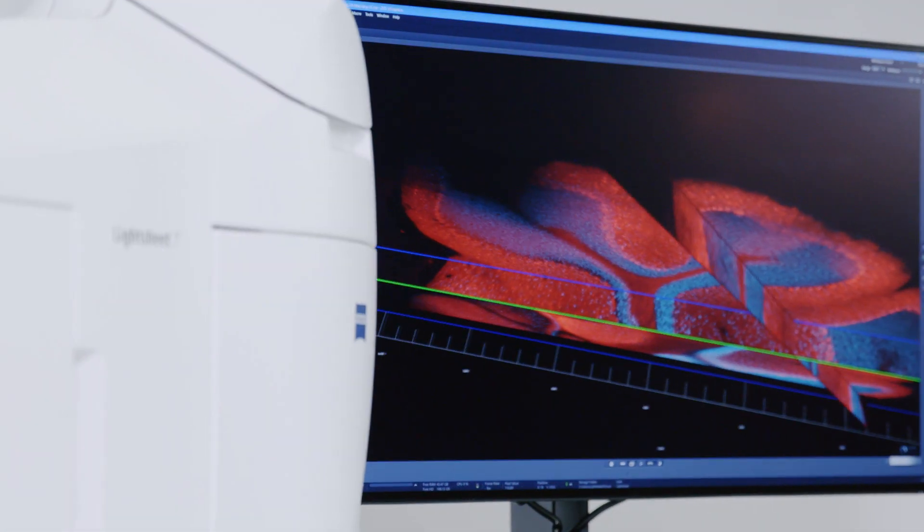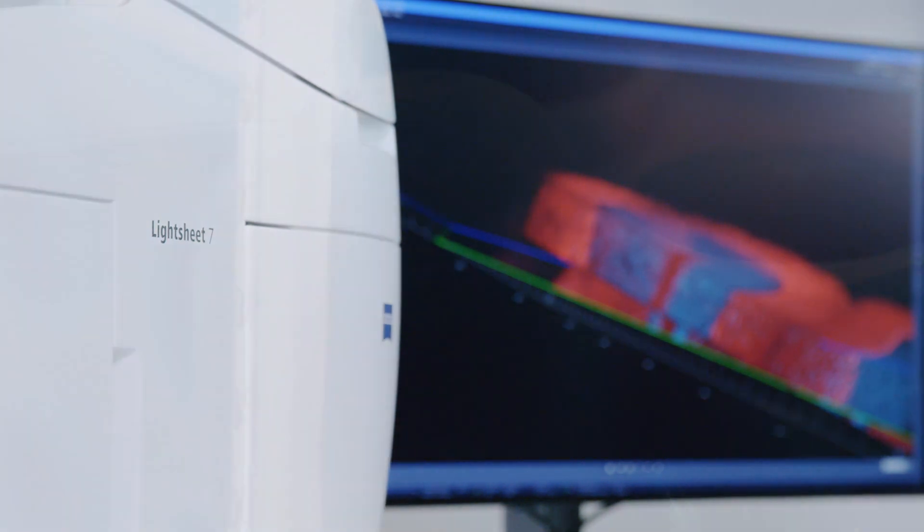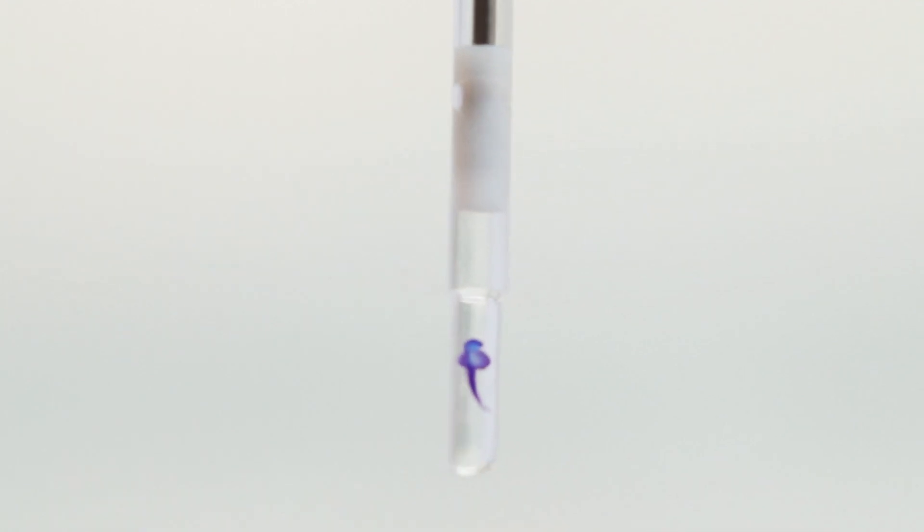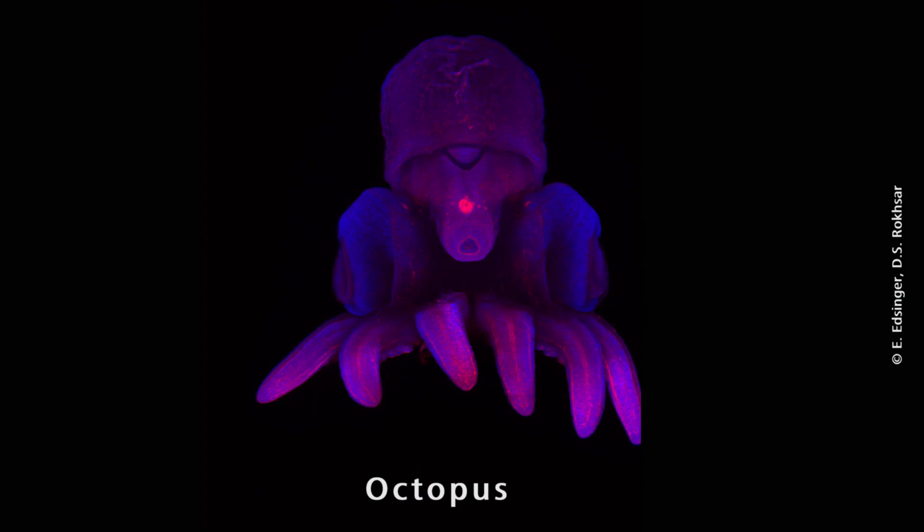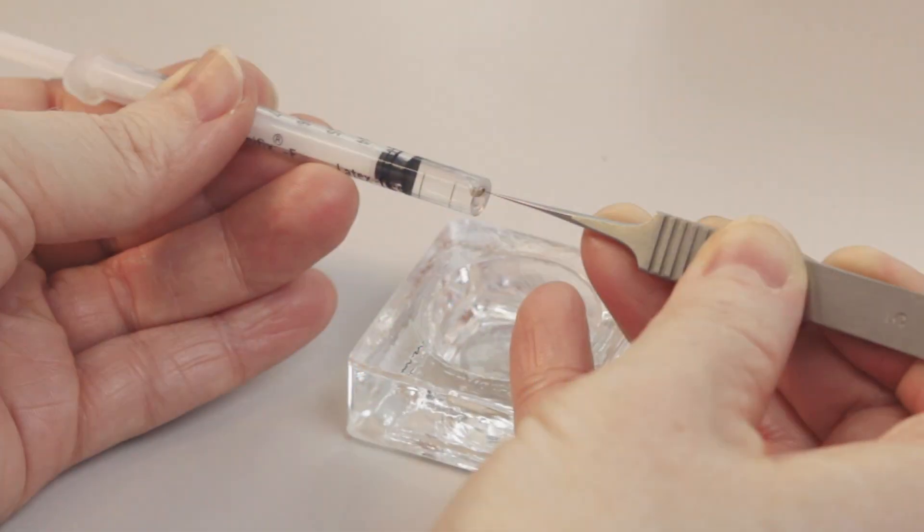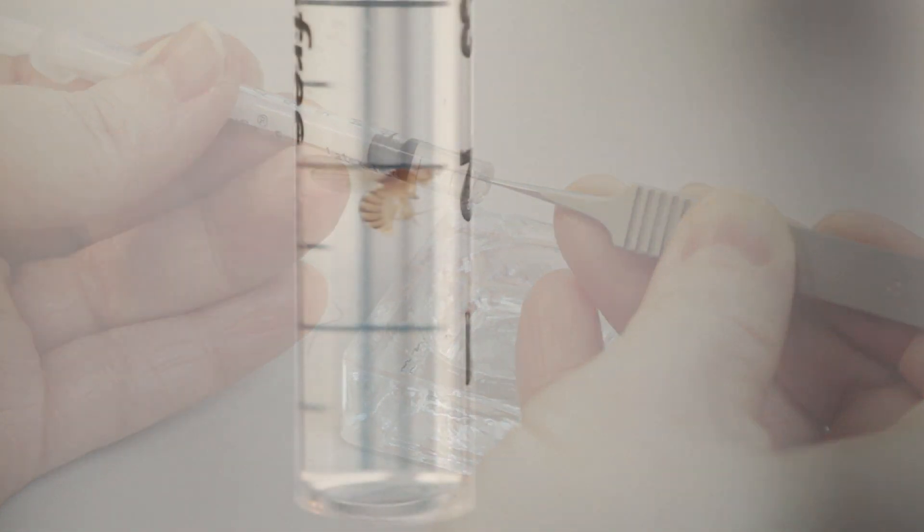One big advantage of LightSheet 7 is that three-dimensional specimens are not confined to slides or petri dishes, but embedded in a clear gel. The developing organisms benefit from having just the right physiological conditions and next to no mechanical stress.